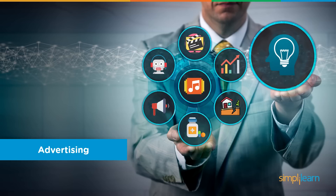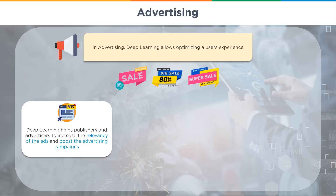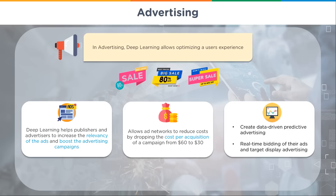Advertising is one of the better-paid fields in AI, especially in marketing with bonuses and commissions. Deep learning allows optimizing a user's experience — it helps publishers and advertisers increase the relevancy of ads and boost campaigns. It allows networks to reduce costs, such as dropping the cost per acquisition of a campaign from $60 to $30, enables data-driven predictive advertising, real-time bidding, and targeted display advertising.